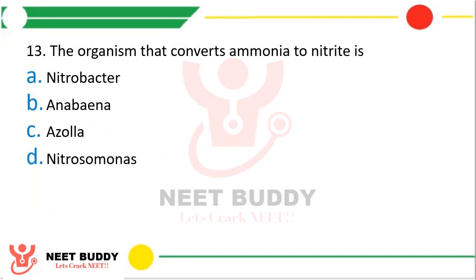Question 13: The organism that converts ammonia to nitrite is? Option A, nitrobacter. Option B, Anabaena. Option C, Azolla. Option D, Nitrosomonas. The correct answer is Option D — Nitrosomonas.